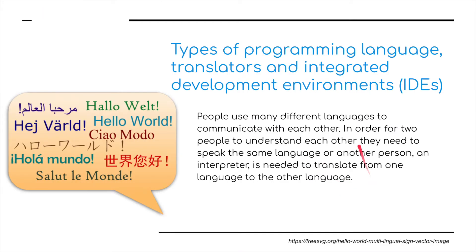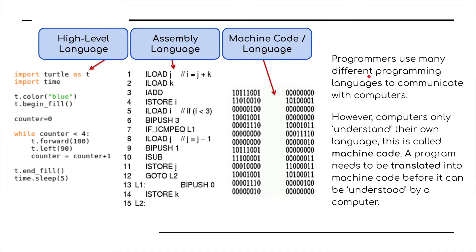People use many different languages to communicate with each other. In order for two people to understand each other, they need to speak the same language, or another person — an interpreter — is needed to translate from one language to another. Programmers use many different programming languages to communicate with computers, but these are generally higher-level languages. Programming languages can be split up into three categories: high-level language, assembly language, and machine code language.